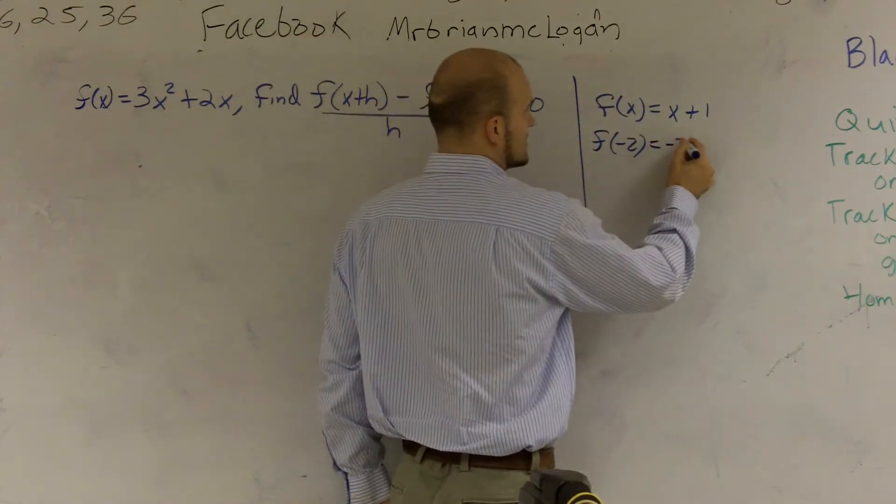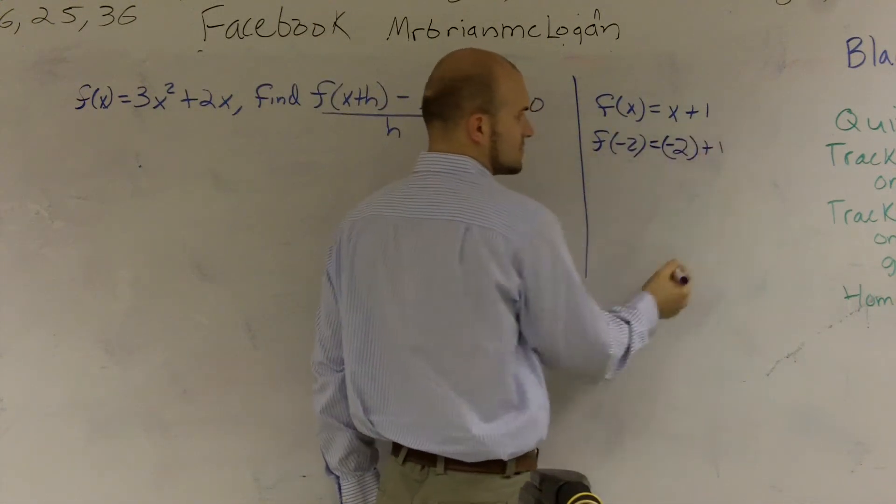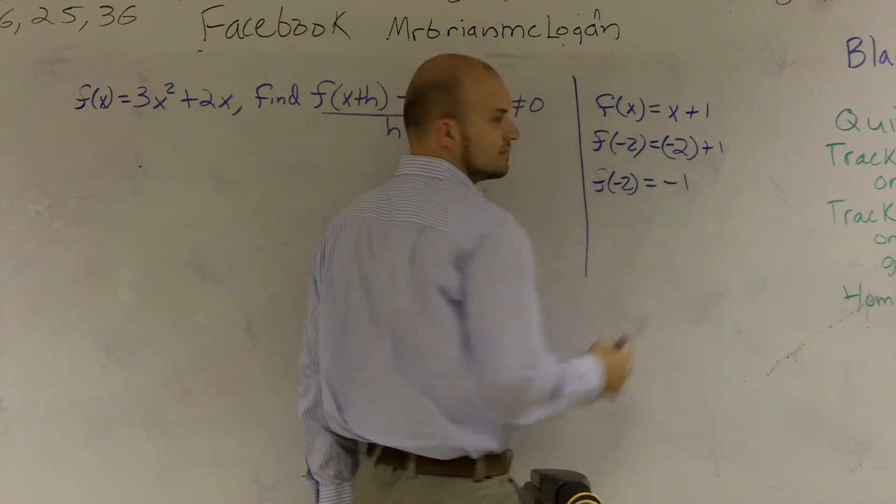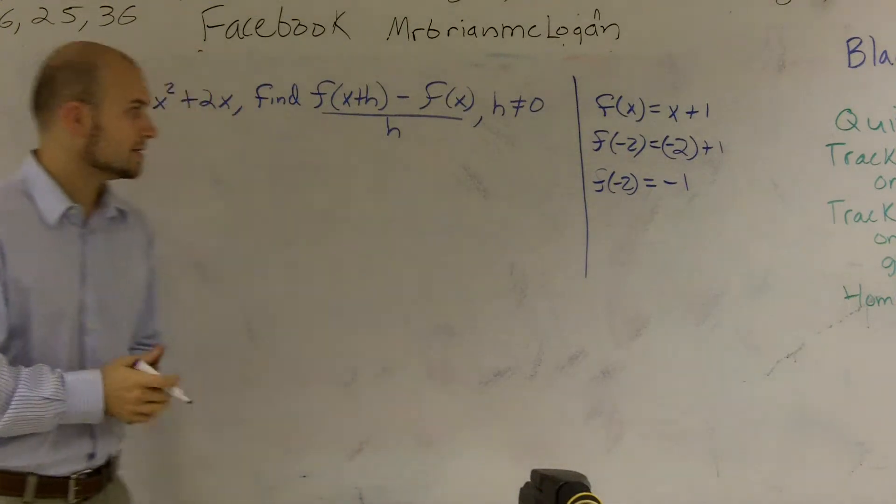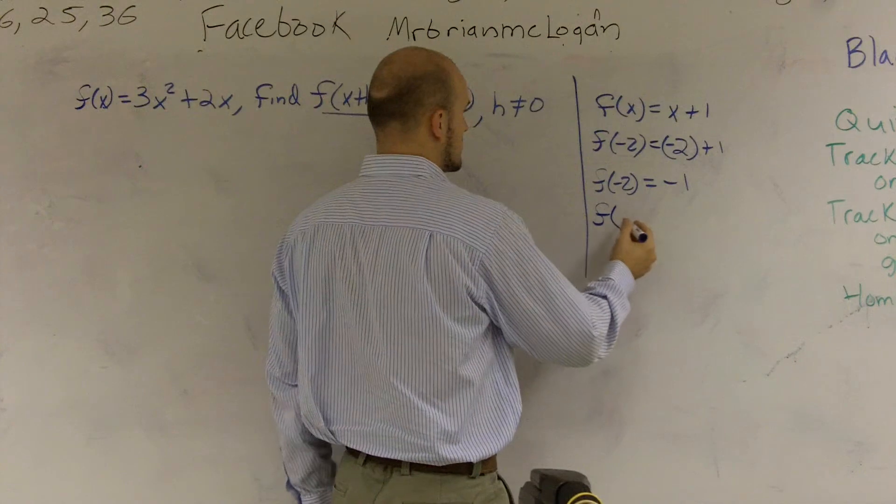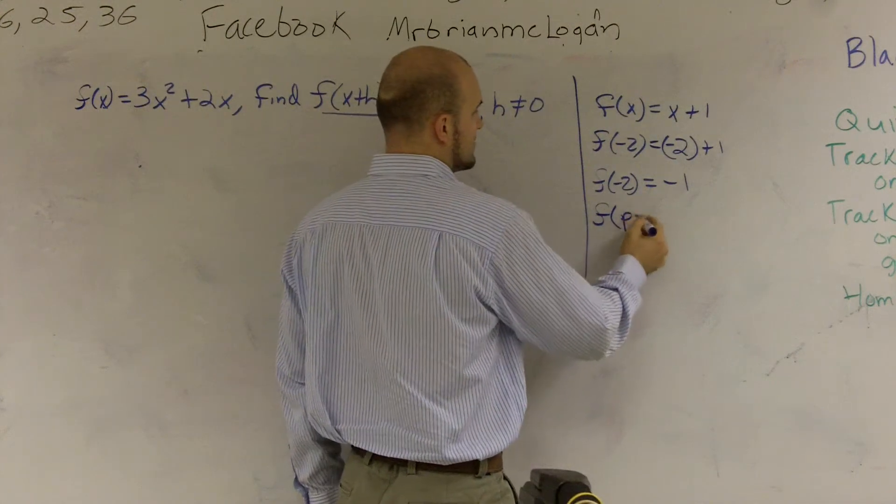So you'd say equals negative 2 plus 1. So then you say $f(-2) = -1$. And then if we were going to make things even more difficult, we could say, what is $f(p - 1)$?